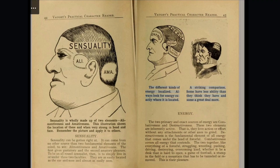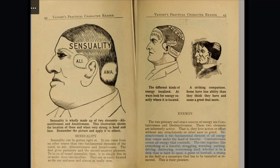The different kinds of energy localized — always look for energy exactly where it is located. Energy. The two primary and exact sources of energy are combativeness and destructiveness. These two elements are inherently active — they love action or effort without any other axes to grind. Destructiveness is the fundamental element of all energy that comes under the head of forceful. Combativeness covers all energy that contends. The two together like everything of a forceful, struggling, wrestling, pushing, driving, destroying, overcoming kind — whether it be a desk that is hard to open, a game of football, a stump in the field, or a mountain that has to be tunneled or removed. This is their pleasure.